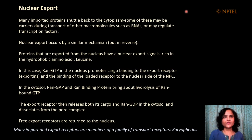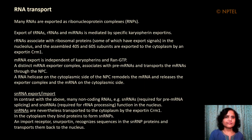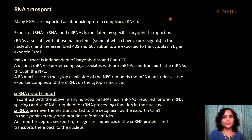The export receptor releases both its cargo and RAN-GDP in the cytosol and dissociates from the pore complex. The free export receptors are then returned to the nucleus. Many of these import and export receptors are members of a family of transport receptors known as karyopherins. RNAs are also transported via the nuclear pore complex — many RNAs are exported as ribonucleoprotein complexes. Export of tRNAs, ribosomal RNAs, and miRNAs is mediated by specific karyopherin proteins.